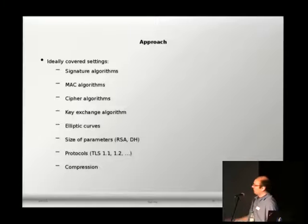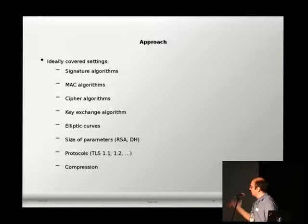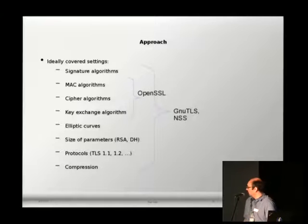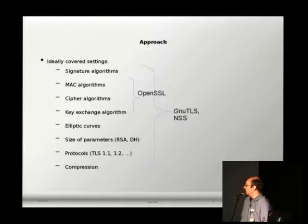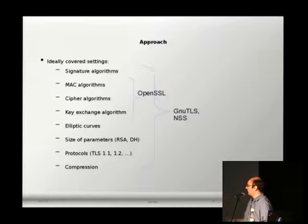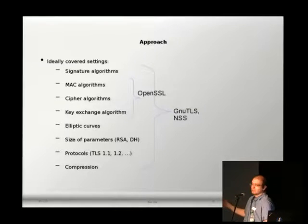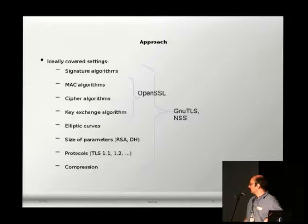Ideally we wanted to cover everything related to cryptography: signature algorithms, MAC algorithms, cipher algorithms, key exchange algorithms, elliptic curves, size of parameters, and protocols. We managed to cover everything for GNUTLS and NSS, but for OpenSSL the default cipher suite string is restricted to a subset. We couldn't cover everything through policy alone and had to rely on packagers to restrict to acceptable defaults for everything else. For now, upstream OpenSSL developers are not interested in extending their cipher suite string.